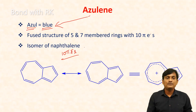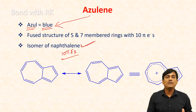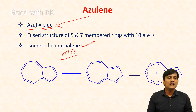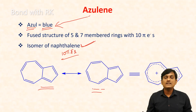Azulene is an isomer of naphthalene. We know that naphthalene is aromatic — it is a benzenoid aromatic compound. As like naphthalene, azulene is also aromatic. If you take the resonance structures of azulene, these are two resonance structures and this is the resonance hybrid of azulene.